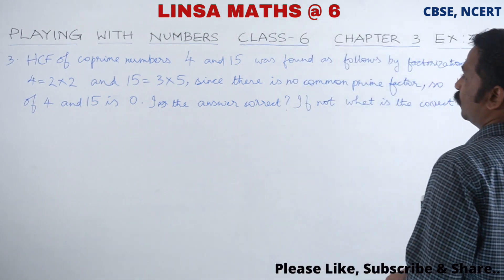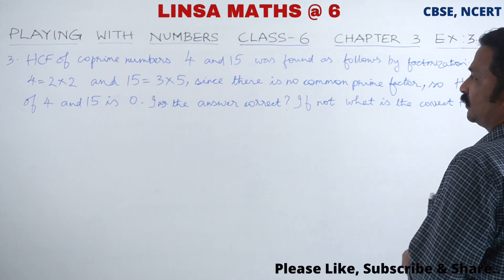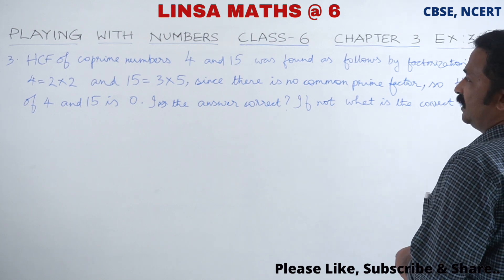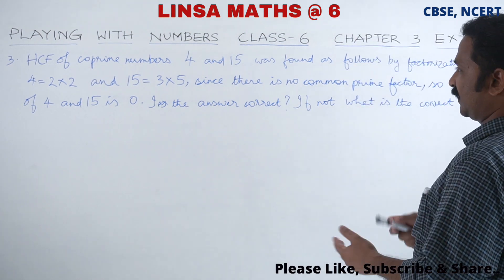HCF of prime numbers 4 and 15 was found as follows by factorization. 4 is equal to 2 into 2, and 15 is equal to 3 into 5. Since there is no common prime factor,